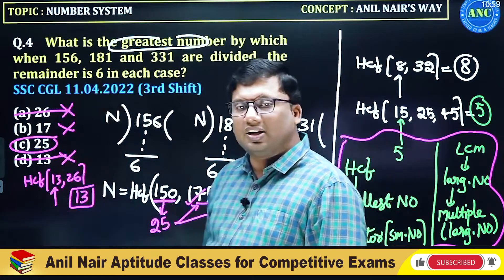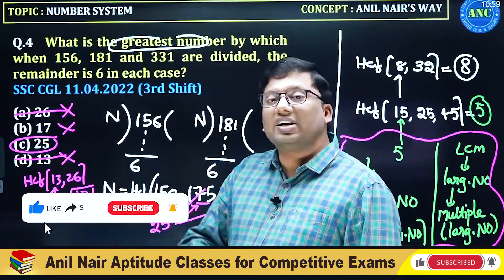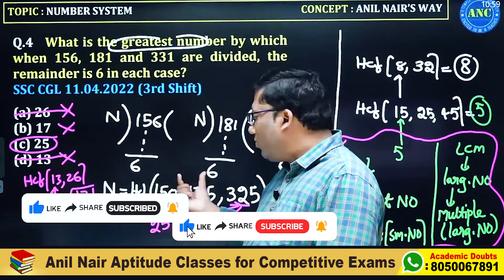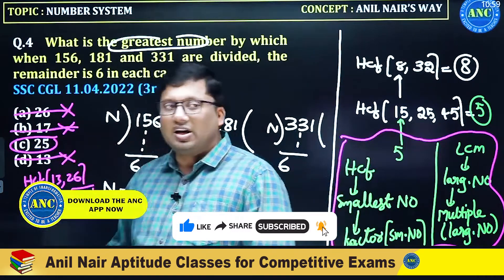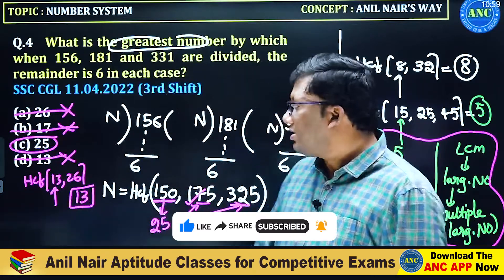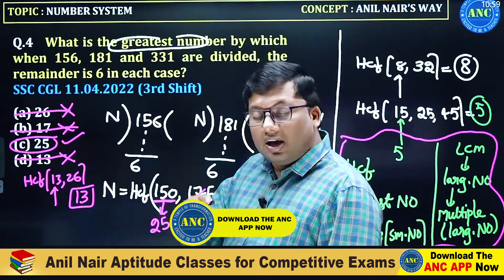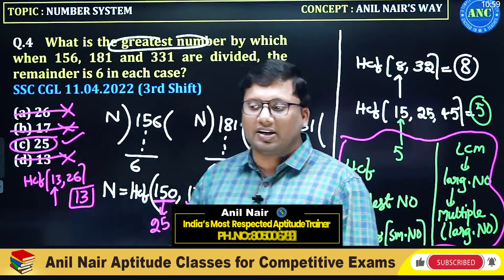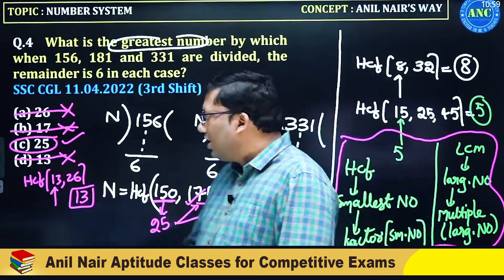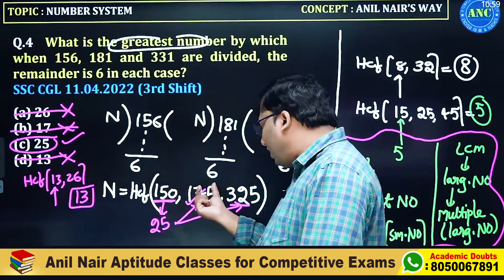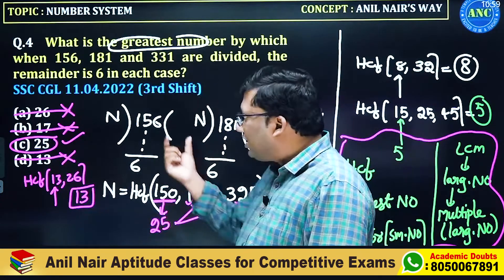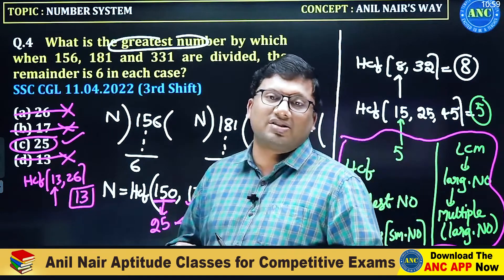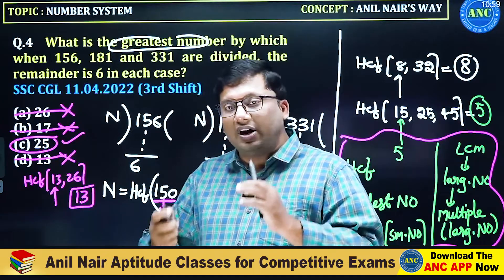Can 17 be the answer? 17 cannot be the answer. If 17 is the answer, every input number should be divisible by 17. But 150 is not divisible by 17, so 17 is eliminated. Therefore the answer for this question is 25. If the answer is 13, every input number should be divisible by 13 — not possible. If the answer is 17, every input number should be divisible by 17 — 150 is not divisible by 17. So the answer is confirmed as 25.